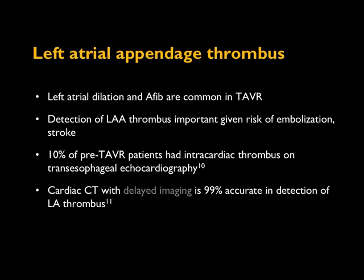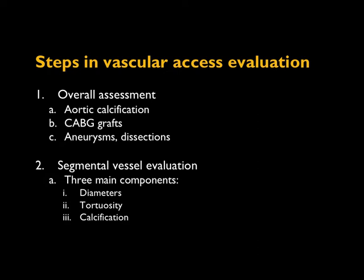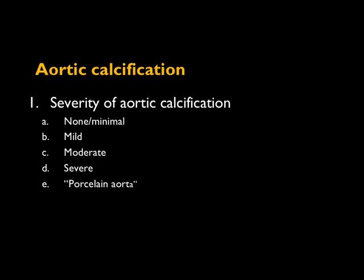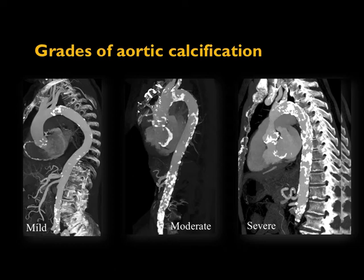For vascular access analysis, we first provide an overall assessment: the degree of aortic calcification, CABG grafts, and any risky features such as aneurysms or dissections. Then we do a piece-by-piece evaluation of vessel segments assessing diameter, tortuosity, and calcification. For the general aortic overview, calcification severity is a qualitative assessment ranging from none to severe and porcelain aorta.